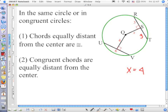How do you know that they're equally distant? Because the chords are equal. And we just said, chords equidistant from the center are congruent. Chords congruent are equidistant from the center.